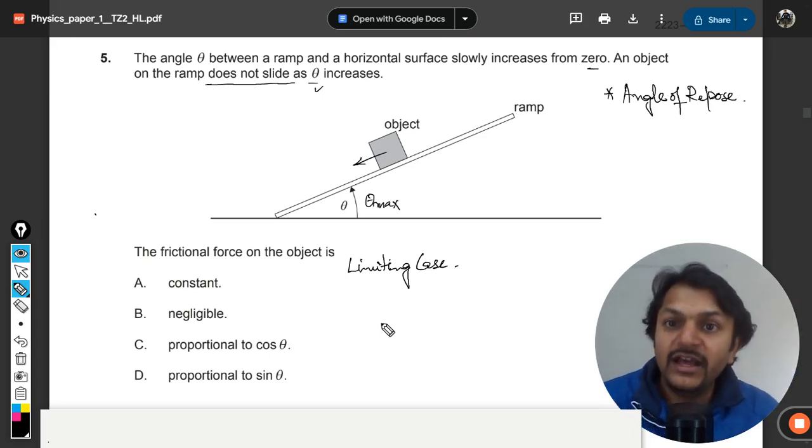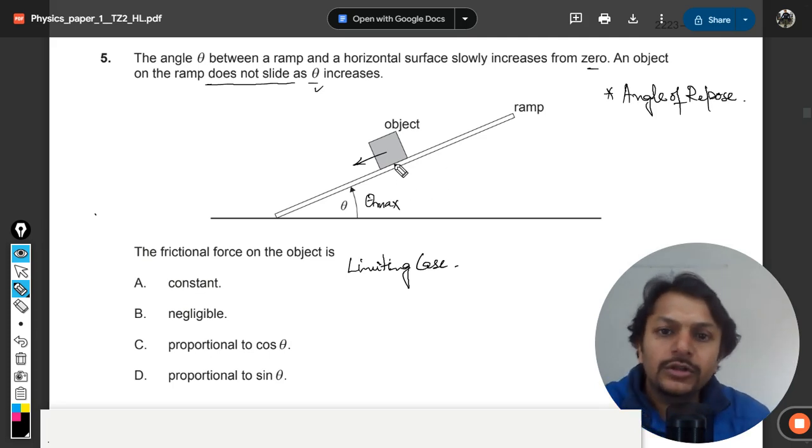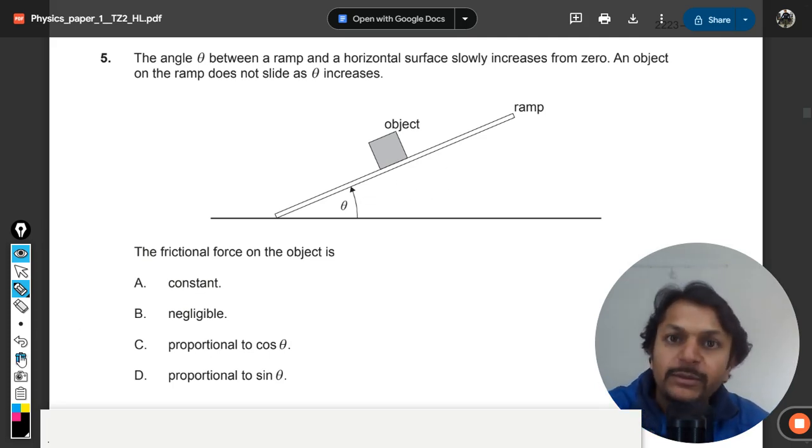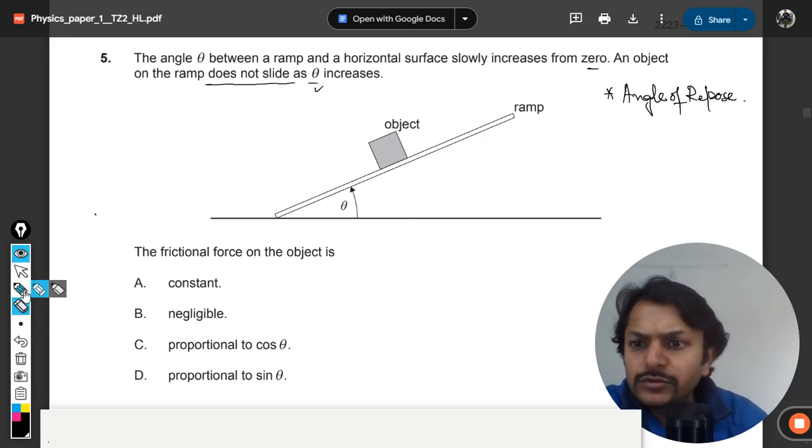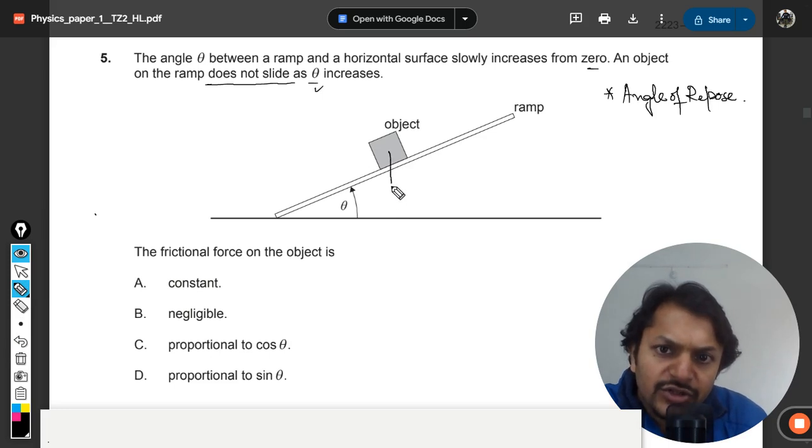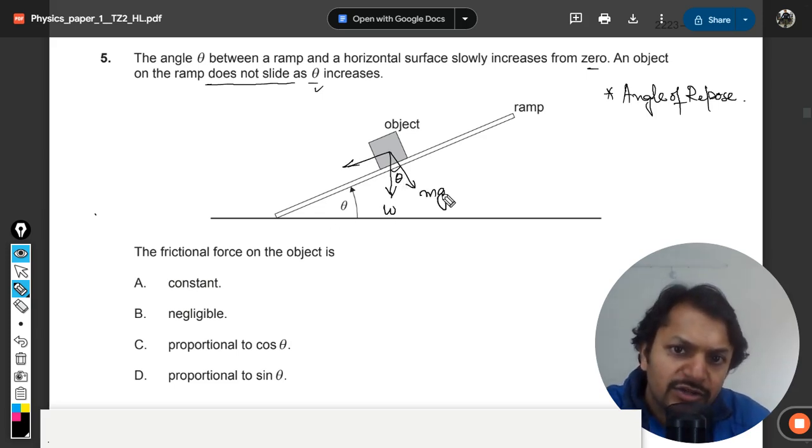That will be known as limiting case, meaning that it is the limit of the theta so beyond that the object will not be static and object will start sliding. So now what we do, we are going to understand this first of all. So this is the weight, so two components will be created here.